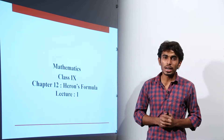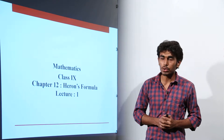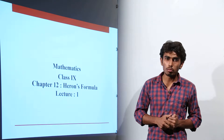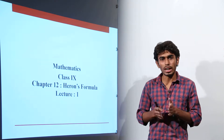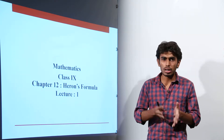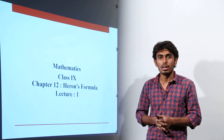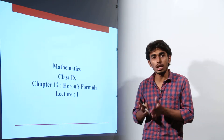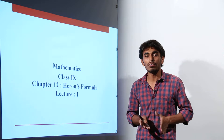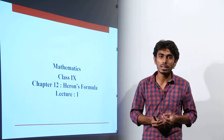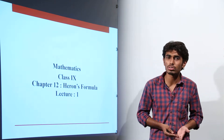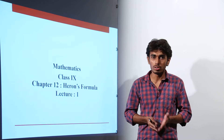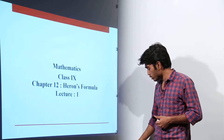The chapter we are going to study today is Heron's formula. We have studied different formulas to find the area of triangles, parallelograms and other figures. Now we will try to find a formula that can help us find the area of any triangle — be it an equilateral triangle, an isosceles triangle, a right angle triangle or a scalene triangle.